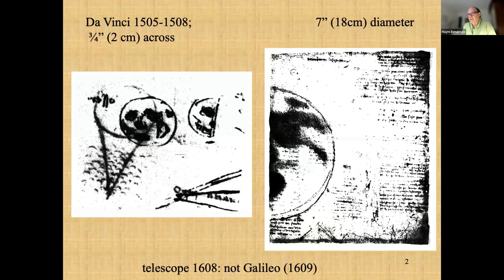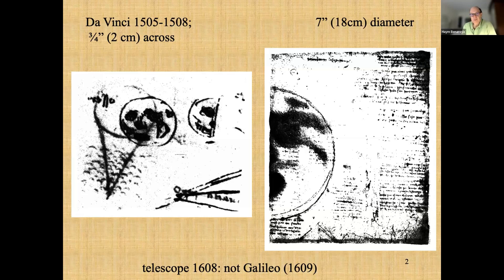I always like to start with these sketches by Leonardo da Vinci from 1500 — over 500 years ago. These are some of the earliest sketches of the lunar surface. The one on the left is only two centimeters, the one on the right is 18 centimeters. Of course, they didn't know what those dark spots were, but that was probably the initiation of documenting the lunar surface. Galileo was the first to use a telescope, invented in 1609, to start looking at the moon.